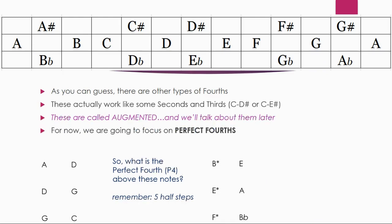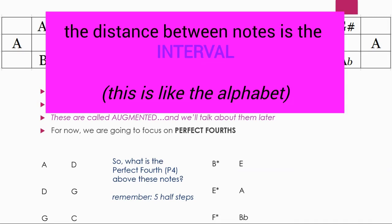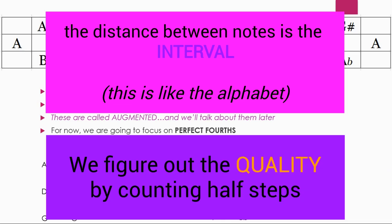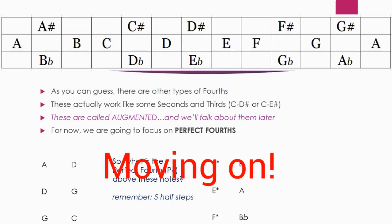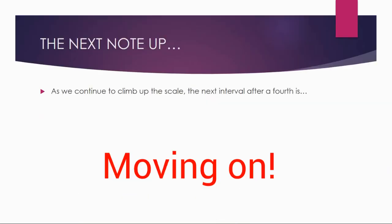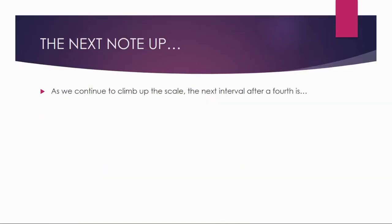And that's fourths — pretty straightforward, just like seconds and thirds. You count the alphabet for the interval, and you count half steps for the quality. Nothing new, just continuing with what we knew. As we continue to climb up the scale — seconds to thirds, thirds to fourths — after a fourth, you guessed it: it's a fifth.